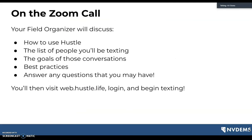On this Zoom call, your field organizer will go through a couple of things with you, including how to use Hustle so everyone is on the same page. They'll go over the list of people you're texting — who they are, what the goals of these conversations are — as well as best practices and answer any questions you may have. Before hopping off, you'll go to web.hustle.life, log into your account, make sure your workflow is showing up, and then begin texting.